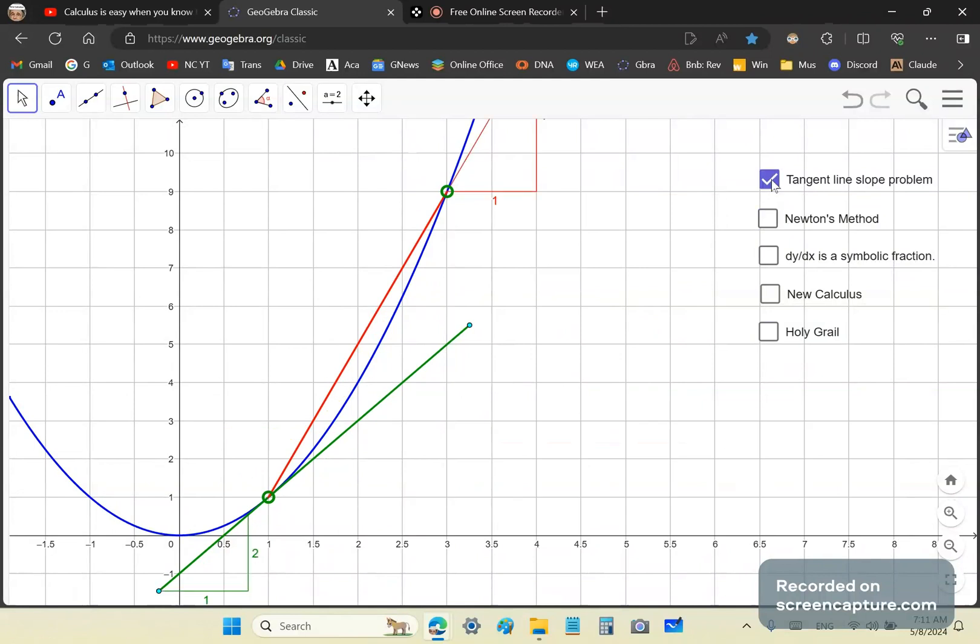So the tangent line problem basically involved—here's the slope of this red secant line—it involved basically trying to get it as close as possible to the tangent line. But at the point of tangency it disappears. It's not there anymore, this finite difference.